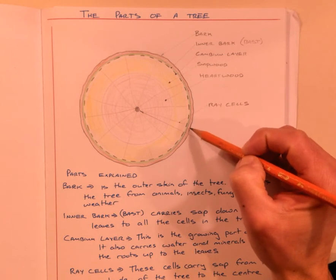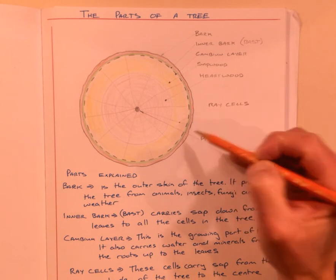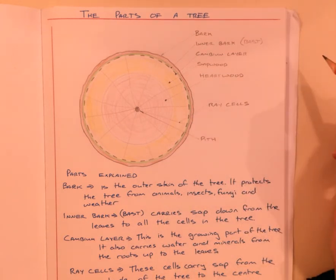The last part we have is the bark on the outside. The bark is a tough outer skin that protects the tree from animals, insects, fungus, and weather - very hot weather, very cold weather, wind, snow and ice, or any type of bad weather.